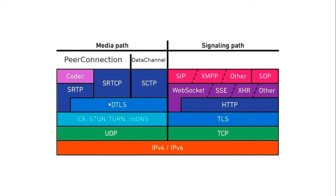Once the signaling path is established, the media path follows. The media path uses UDP as the transport protocol, and over UDP it sends encrypted packets. For encryption, DTLS and SRTP are used — SRTP is Secure RTP. ICE, STUN, and TURN are used for detecting the shortest path for peer-to-peer connections. So ICE, STUN, TURN, SRTP, and DTLS are all the protocols used for the media path.